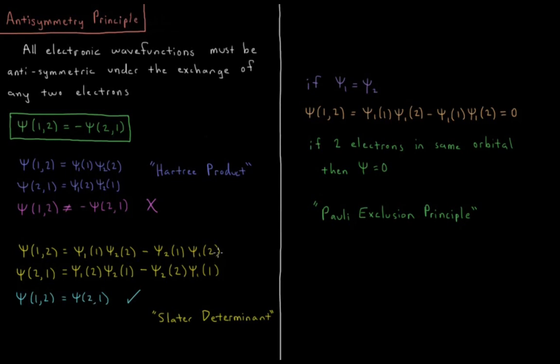What happens if we switch all the labels for electron1 and electron2 here? So make this 2, 1, 2, 1. So Psi(2,1) now equals Psi1(2) Psi2(1) minus Psi2(2) times Psi1(1). If you'll notice, this term is equal to the negative of this term, and this term is equal to the negative of this term. So in fact, the way we have constructed this, we have made Psi(2,1) equal to minus Psi(1,2).